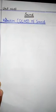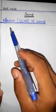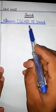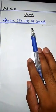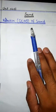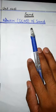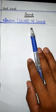Today our topic is about reflection, echo of sound. When we clap or shout near a reflecting surface such as a tall building or a mountain, we hear the same sound again a little later.